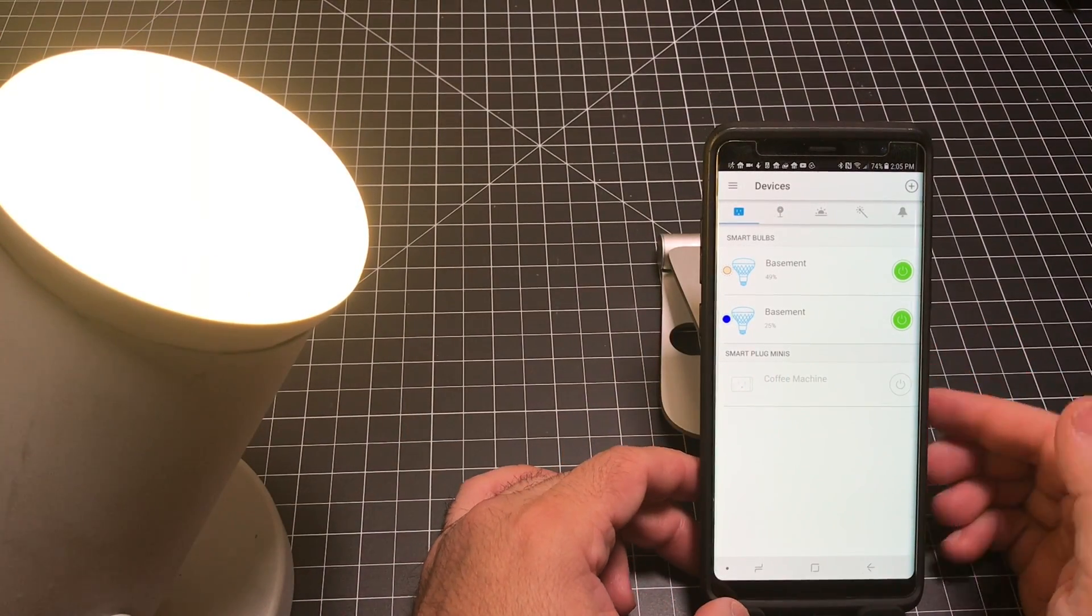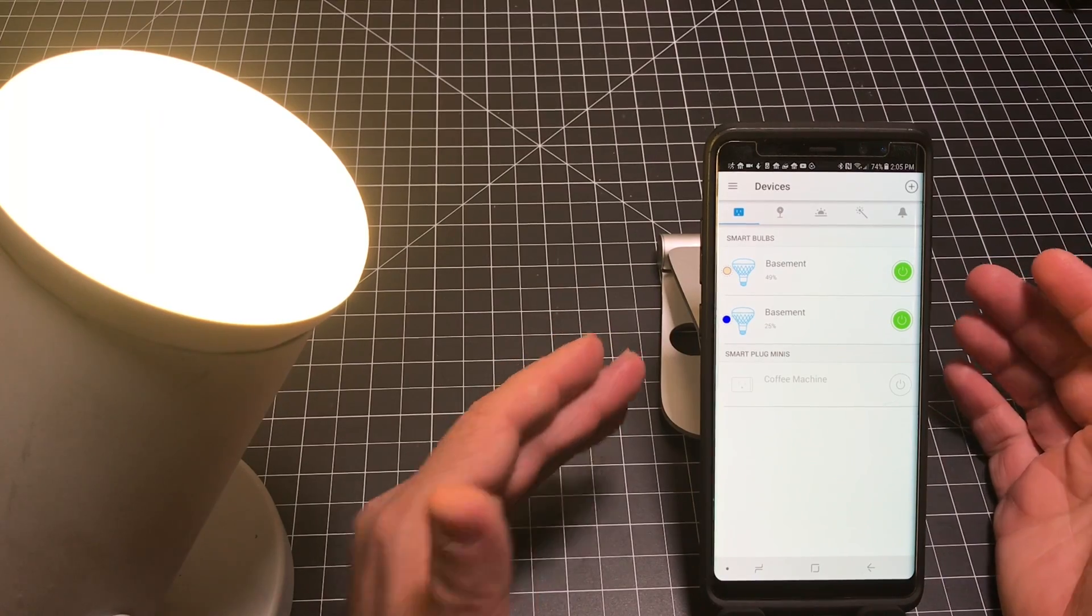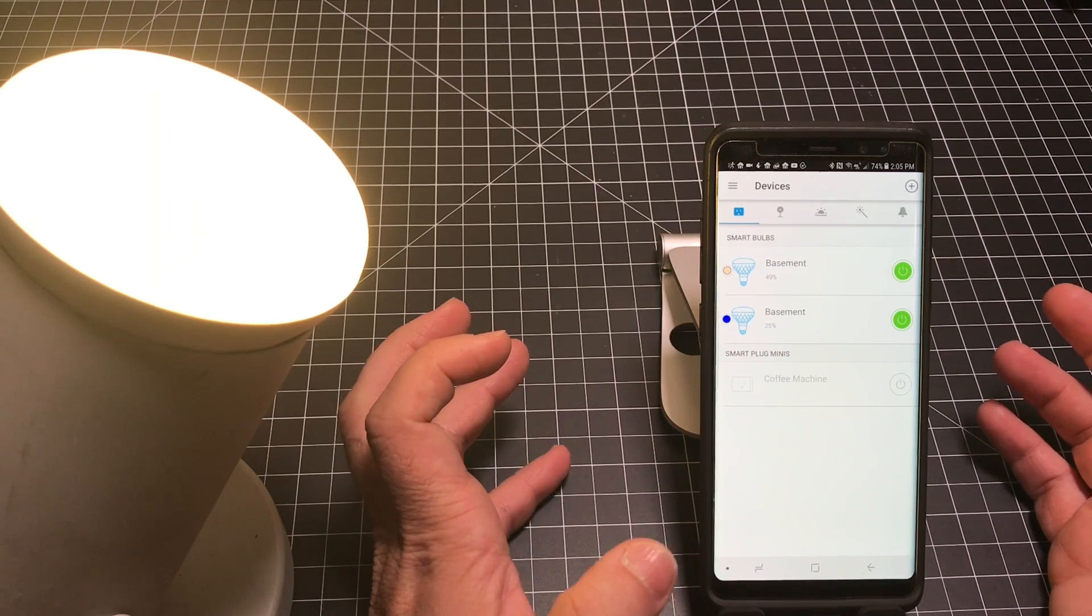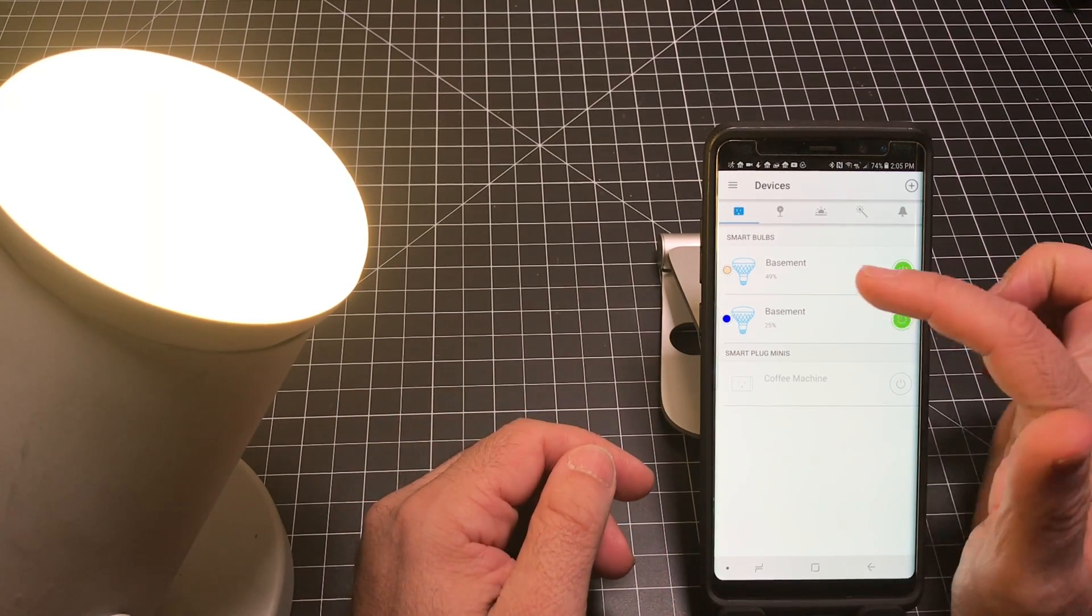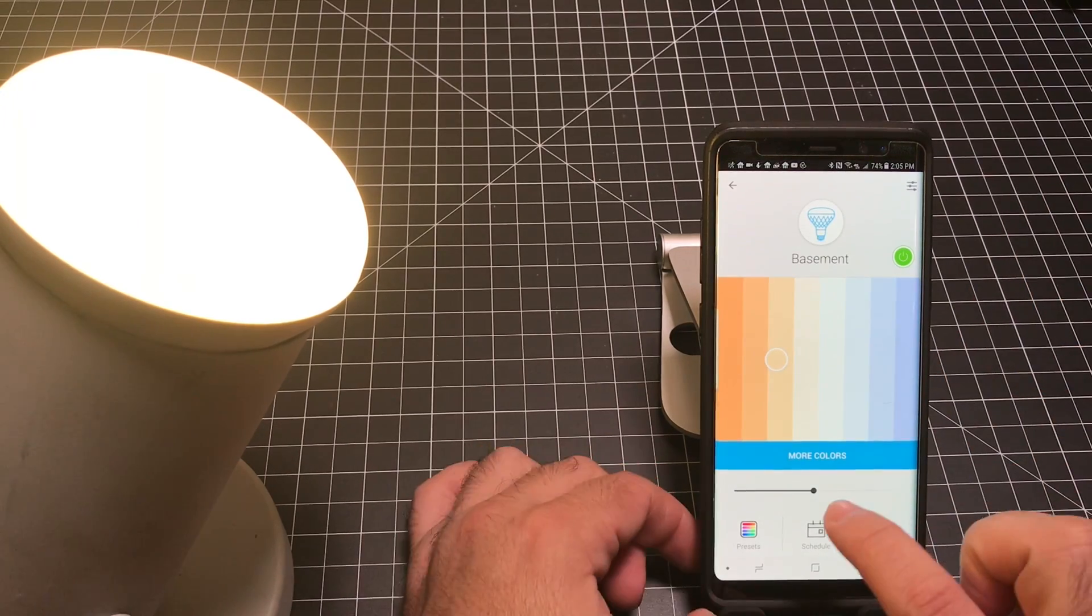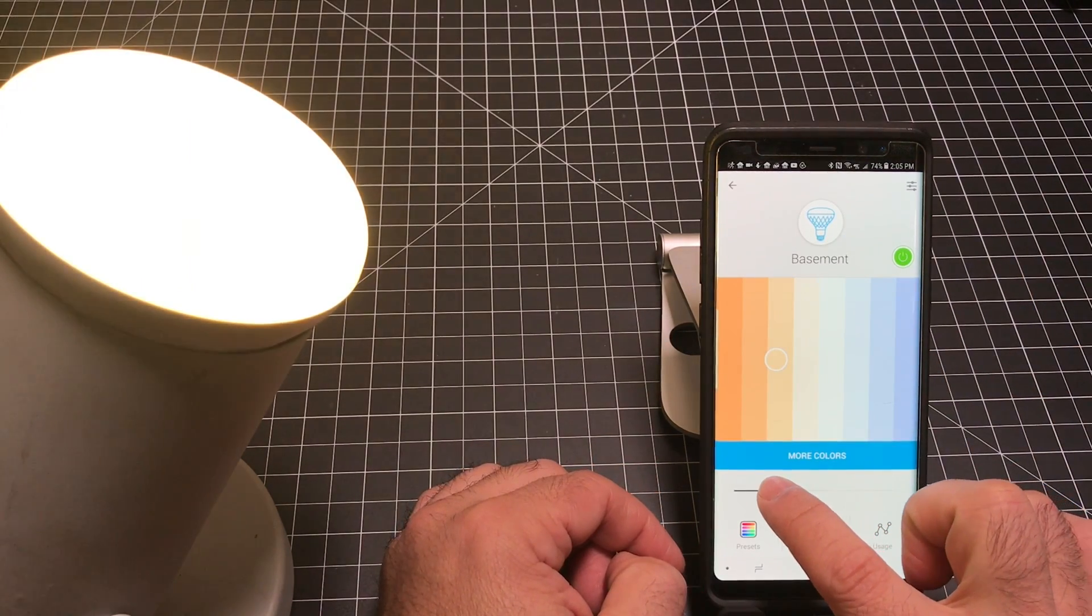All right. So now the bulb has been recognized. And I'm actually naming it the same as some of the other bulbs I have in the basement, because they're all going to be in the same area. And I want to control them with one name. A couple things that you'll notice on the app, you do see that there is a percentage. So when I go into the bulb, you can adjust the brightness level. You can see that right here.